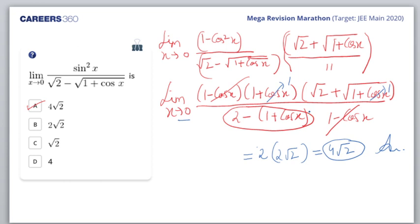You're asking if we can simplify by taking 1+cosx as 2cos²(x/2). Even if you write 2cos²(x/2), when you take the square root you'd get √2·cos(x/2), but then it can be 0⁺ or 0⁻ so you'd have to take the modulus. That mod would create a problem for us - so we prefer rationalization.